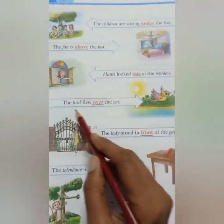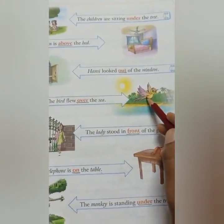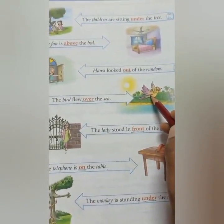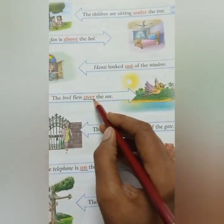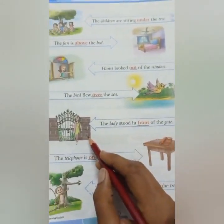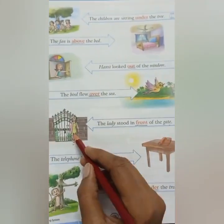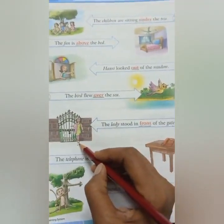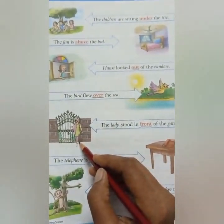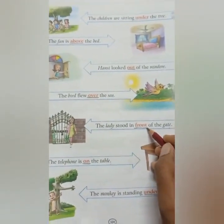Next: the bird flew over the sea. Bird is flying over the sea, so 'over' is telling about the position of the bird. Next: the lady stood in front of the gate. See, the lady is standing in front of the gate, so 'front' is telling about the position of the lady.